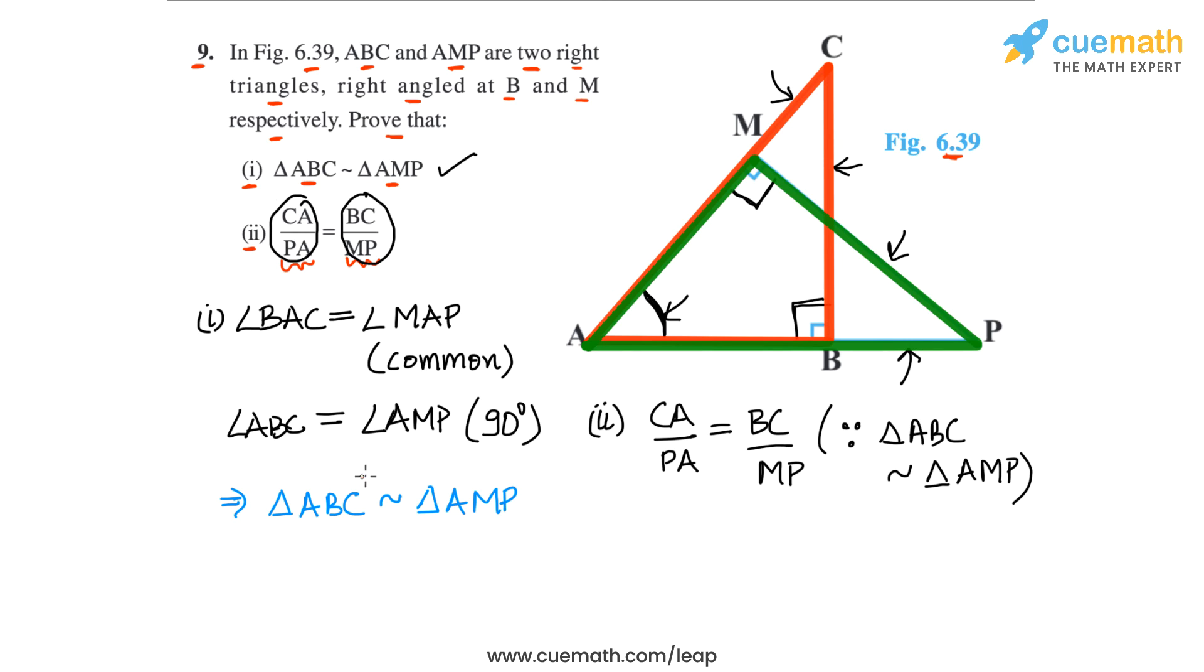If we take CA in the first triangle, like this, C to A, then correspondingly we will get PA in the second triangle. So the first ratio becomes CA by PA. Similarly,